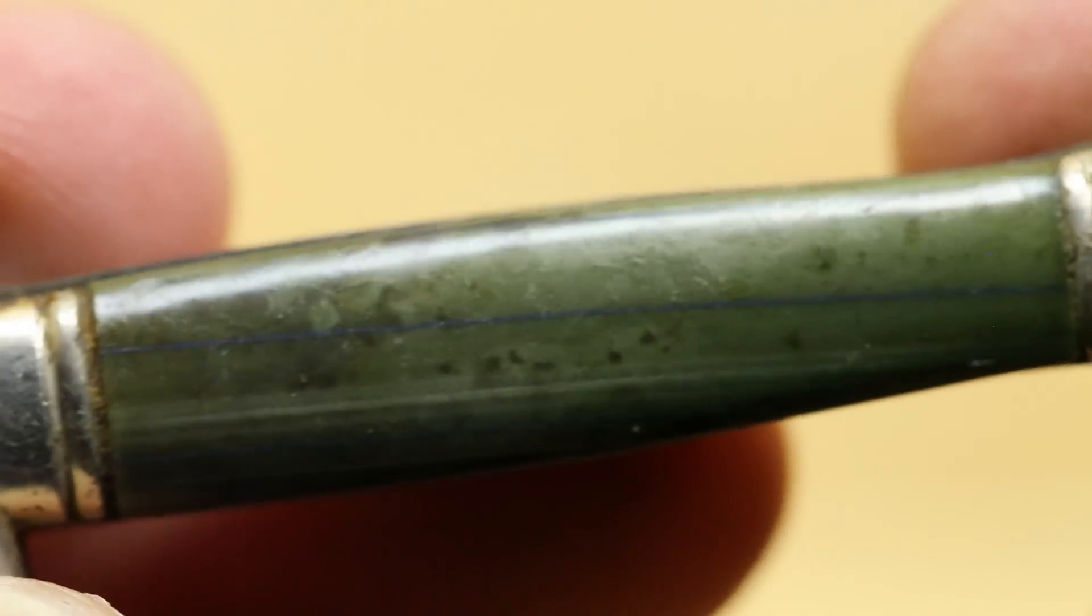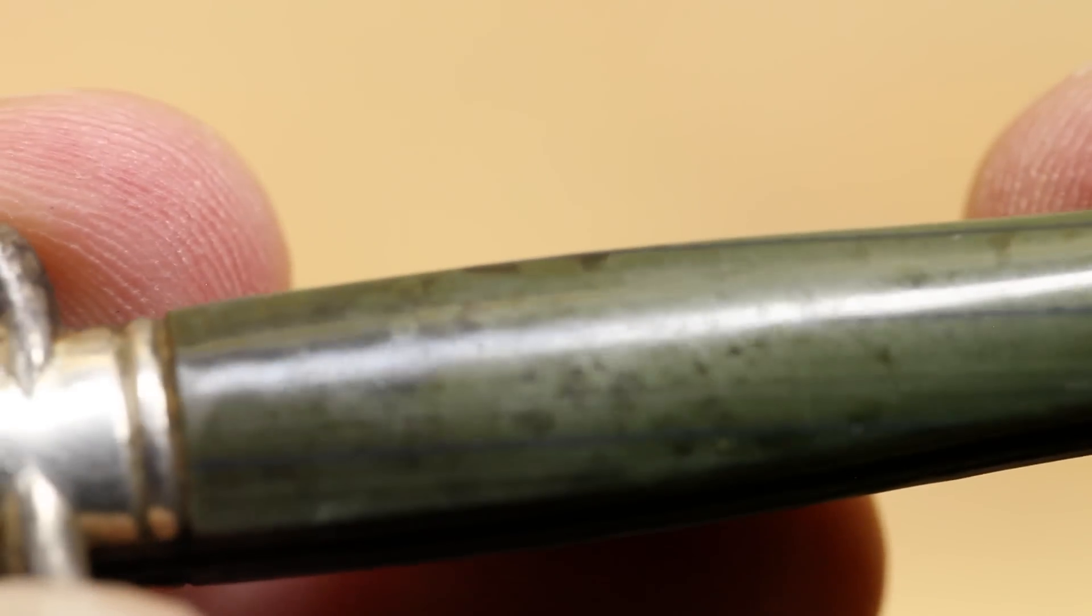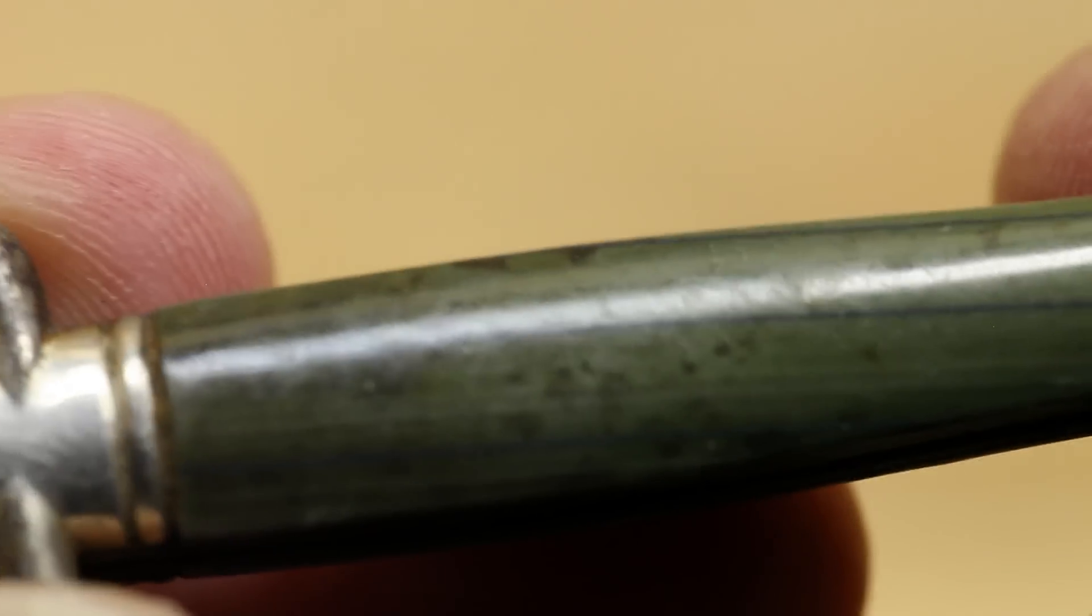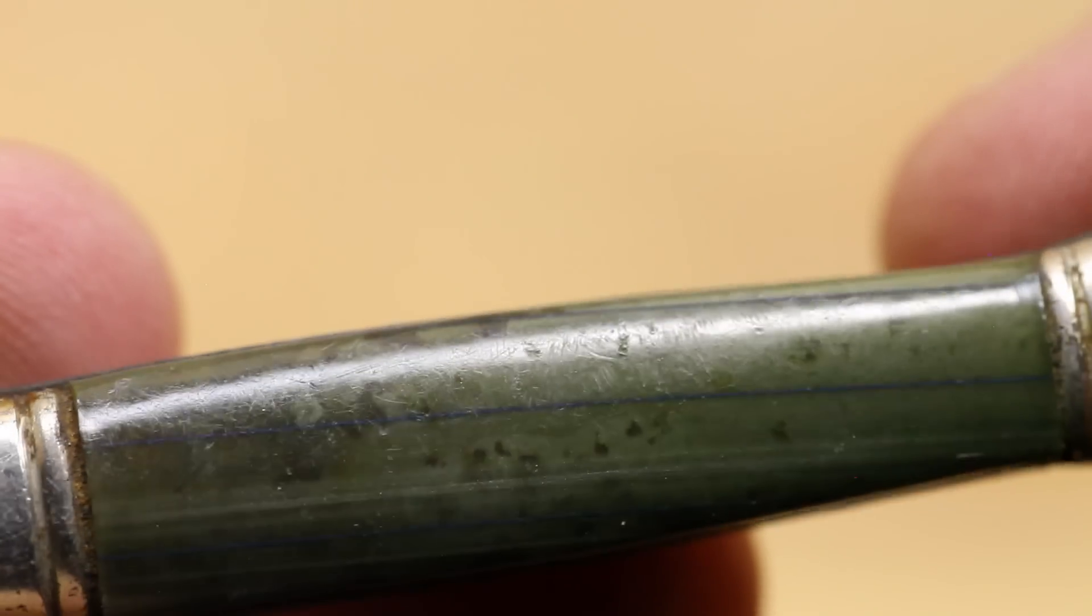Pretty cool looking scale there. It's green. The camera makes it really more green than it looks further away, but it looks like I never even noticed that blue streak going through there.